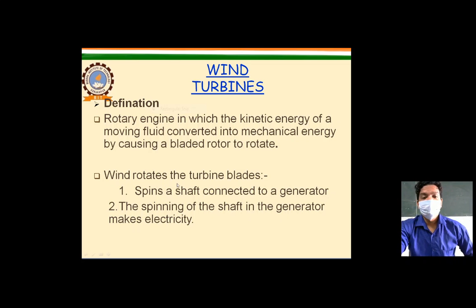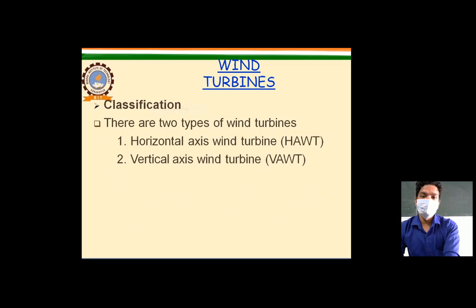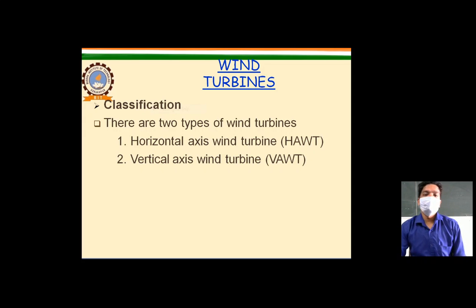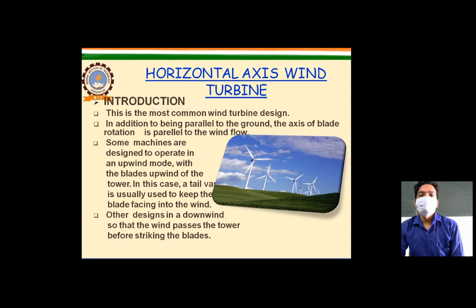Wind rotates the turbine blades. A shaft connected to a generator makes electricity — the mechanical power from the wind is coupled to the generator, which converts mechanical energy into electricity. The classification of wind turbines may take place on the basis of axis orientation: if the axis is horizontal, it is a horizontal axis wind turbine; if vertical, it is a vertical axis wind turbine.